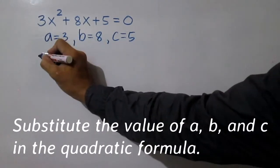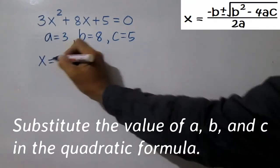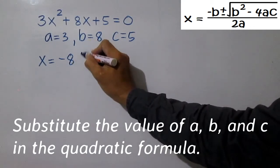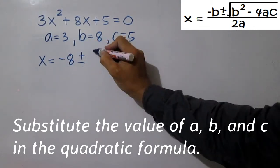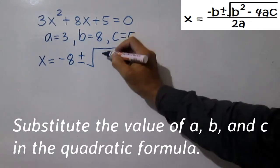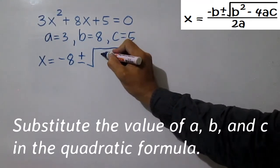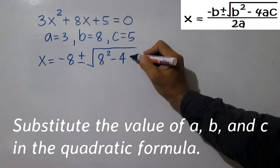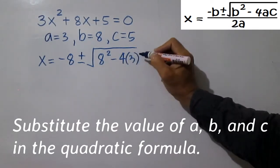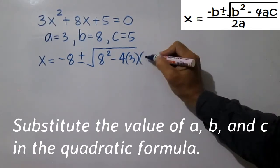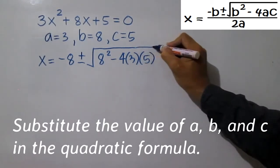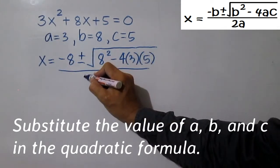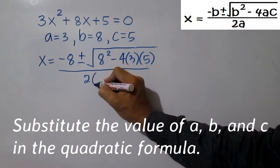Substitute the values of A, B, and C in the quadratic formula. x equals negative 8 plus or minus square root of 8 squared minus 4 times 3 times 5, all over 2 times 3.